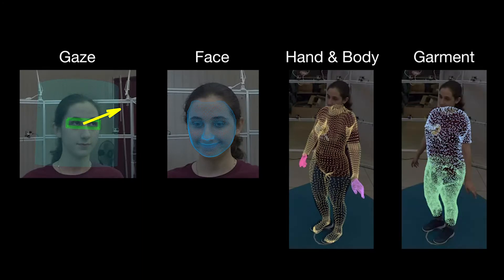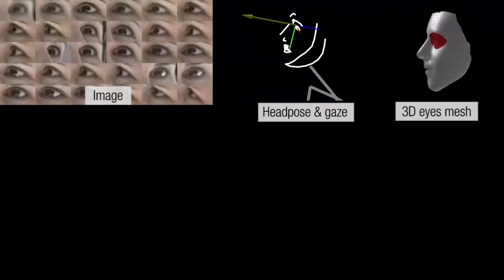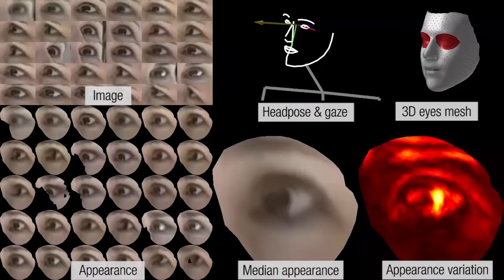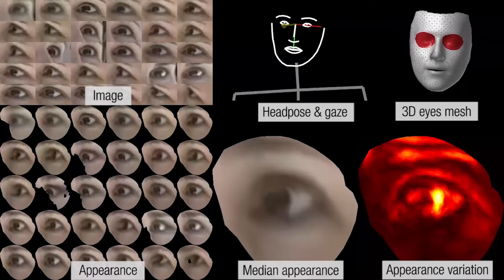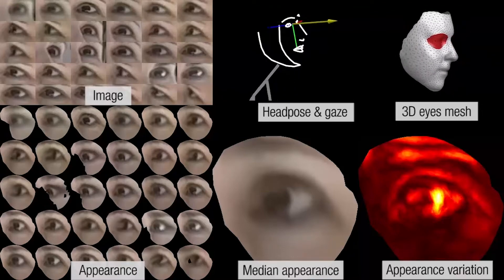For each expression, we provide four representations. For instance, HUMBI gaze consists of multi-view images, 3D keypoints, a 3D mesh model, and appearance maps in a canonical texture coordinate system.